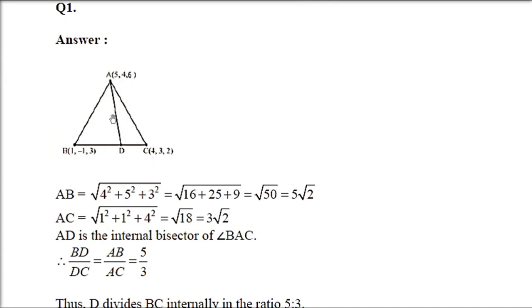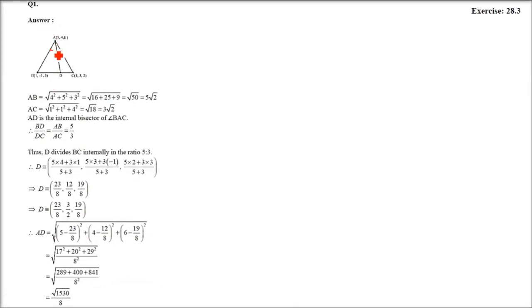There is an internal bisector of angle BAC, that is angle A. On this internal bisector, these two angles are equal. This meets BC at D. So we have to find out the coordinates of D and also the length AD. We will use the internal division or sector formula. Before that, we will use the property of a triangle.